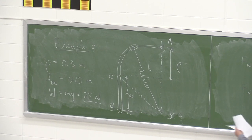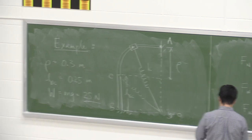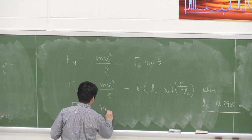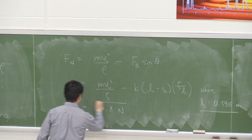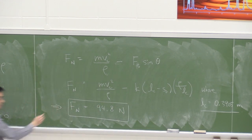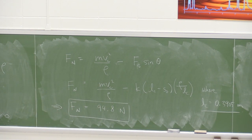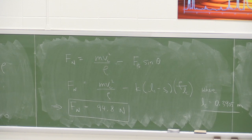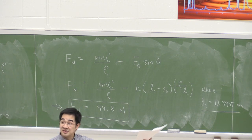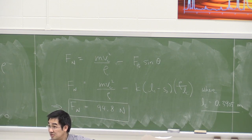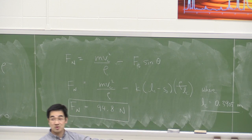Working everything out, Fn equals 94.8 newtons. That's the final solution. Notice you would not have been able to solve this using fx and fy, because you would have needed ax and ay — and there's no way to find that acceleration until you realize that the normal acceleration was available from the quarter circle.